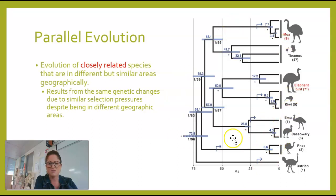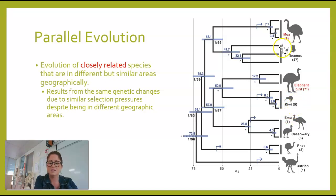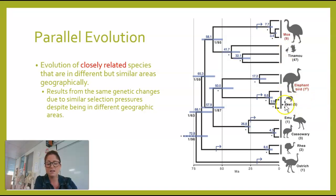Based on this research, they think that flightlessness actually evolved five or six different times throughout history, as well as gigantism of the birds. Some of these birds are really, really big — the elephant bird and the moa. The moa is also found in New Zealand, and there were nine different species of moa, but they are all extinct now. You can see that they're really not that closely related to the kiwi, which is surprising. We call this parallel evolution — gigantism evolved here and here separately, due to similar selection pressures. This phylogenetic tree is an example of both divergent evolution and parallel evolution.